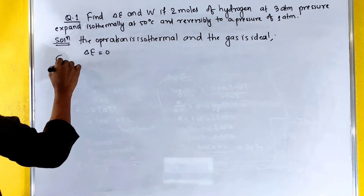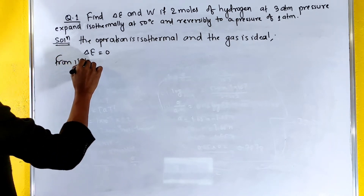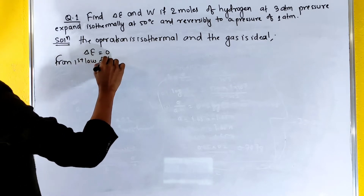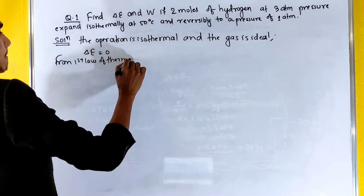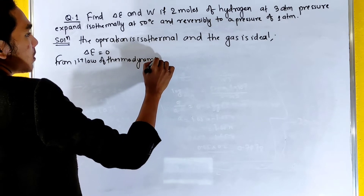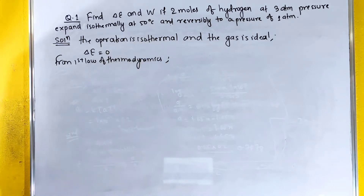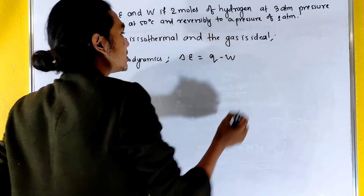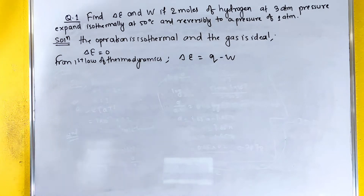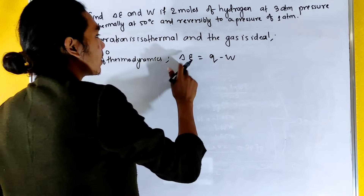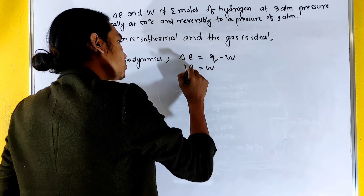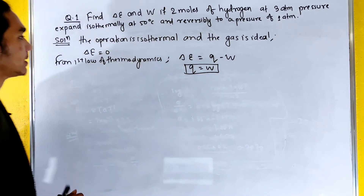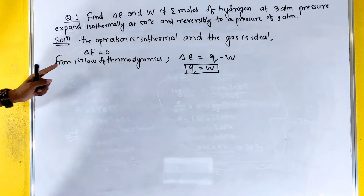From the first law of thermodynamics, delta E equals q minus W. Since delta E equals zero, q equals W. Applying the first law conditions here, we get q is equal to W.